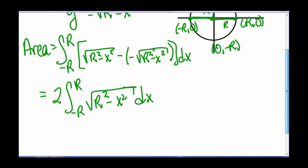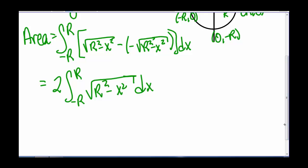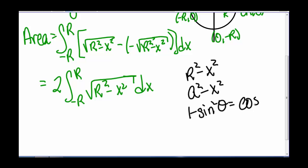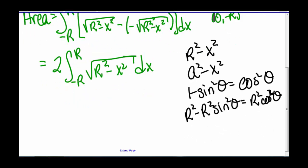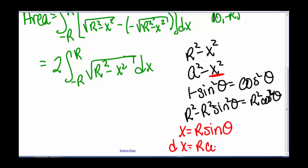So we can use trigonometric substitution. We have r squared minus x squared, which is like a squared minus x squared. We can use the identity that 1 minus sine squared theta equals cosine squared theta — in this case, r squared minus r squared sine squared theta equals r squared cosine squared theta. So x equals r times sine of theta, and dx equals r cosine of theta d theta.